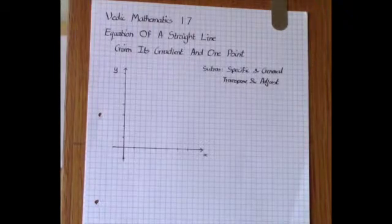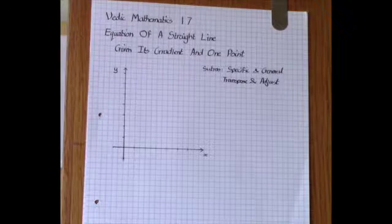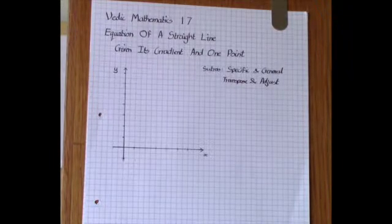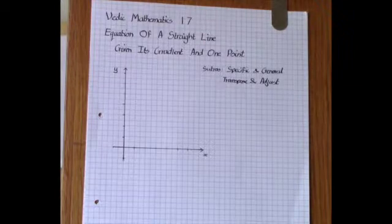One of the most common problems in coordinate geometry is to be able to find the equation of a straight line given its gradient and the coordinates of one point on it.